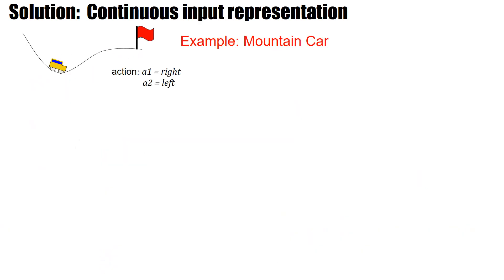Let's start with a super simple example: the mountain car example. I've been living in Switzerland for more than 20 years — we have nice yellow postal cars and very steep valleys. The engine of the mountain car was not strong enough to go up in a single go, so it would move up a bit, take momentum going back, and then go up again. To keep things simple, suppose we only have two actions: full power to the right or full power to the left. It's a one-dimensional problem in space with a single coordinate X.